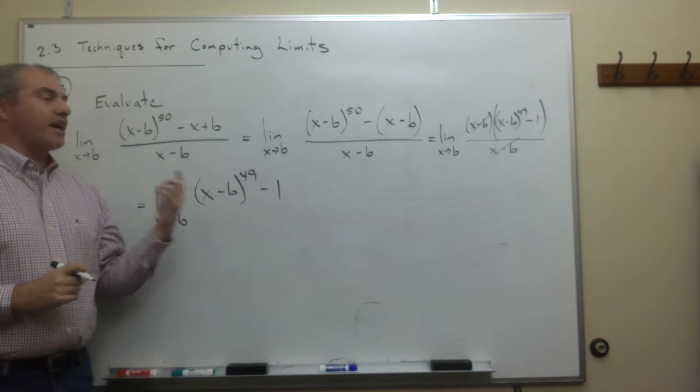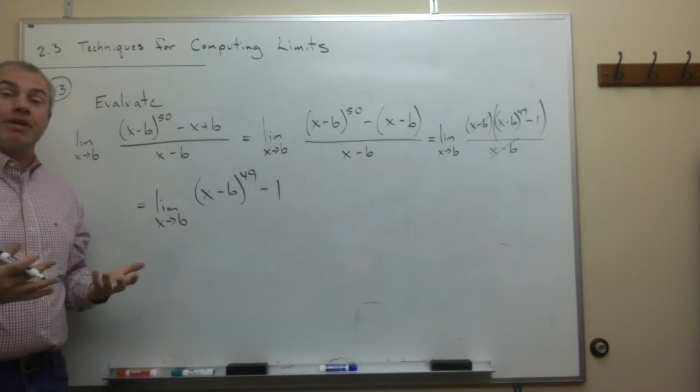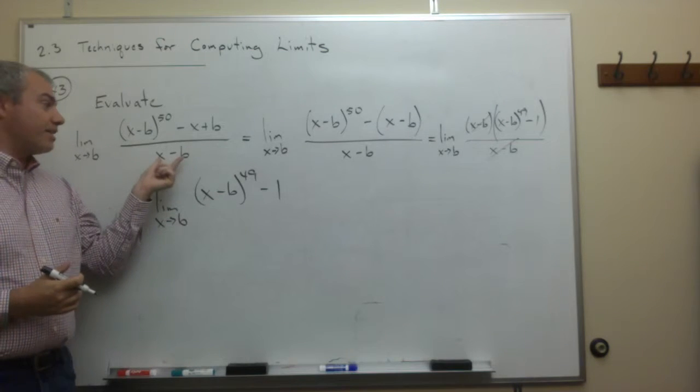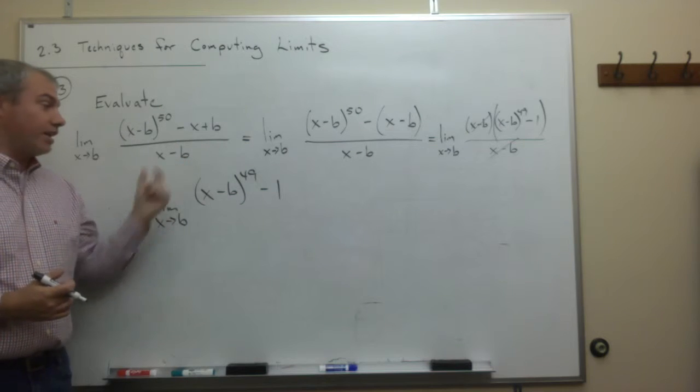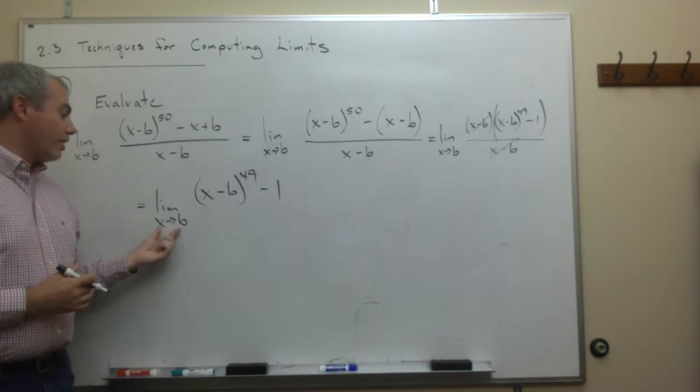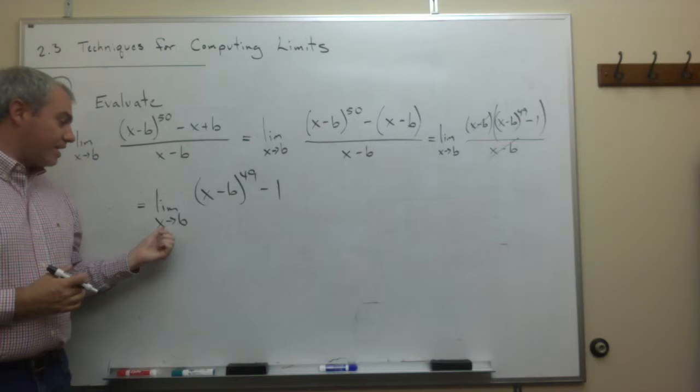This is perfect because I got rid of the problem. The problem here was that I had an x minus b on the bottom, causing division by 0 when I plugged in b. That's not there anymore, so now I can plug in a b for x.